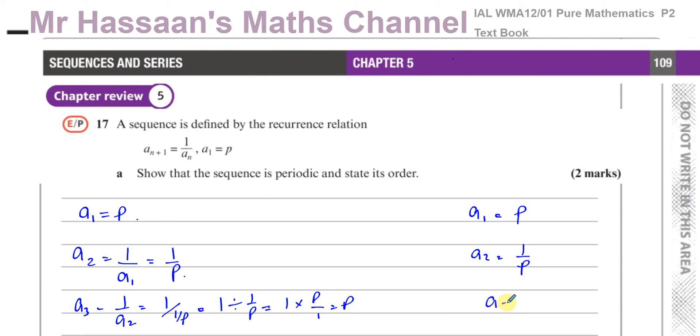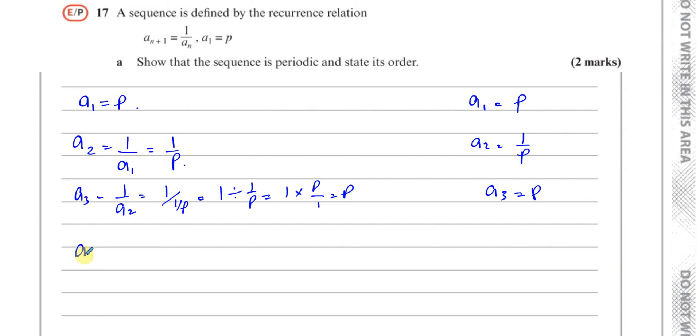So we can see a_3 is going to be p, and we can see now that it's just going to repeat, because of course a_4 is going to be 1/a_3, which is 1/p. So this is a sequence that's going to keep repeating: you start with p, then you'll have 1/p, then you'll have p, then 1/p.